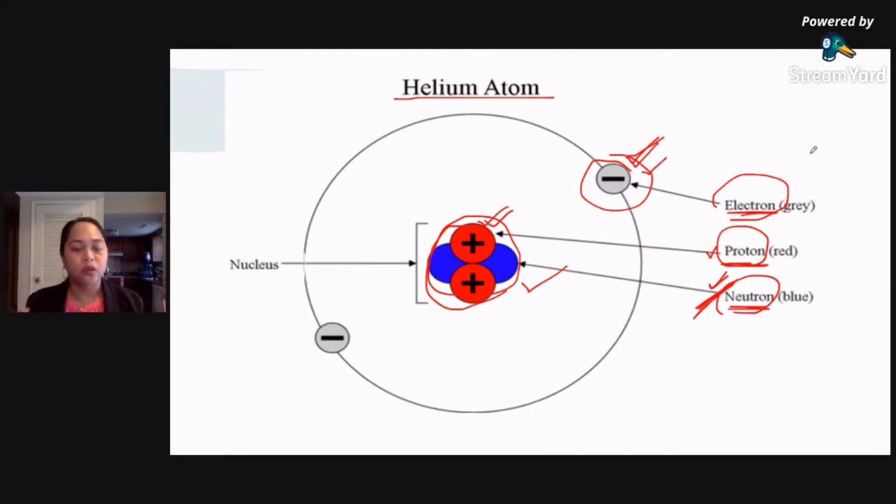Stable siya, neutral siya, wala siyang charge. Wala siyang charge dahil meron siyang dalawang negative, meron din siyang dalawang positive. Pero, pag nawala itong isang electron mo, that means may sobra ka ng isang positive charge. So, that means magiging positive 1 na ang charge ng iyong atom.